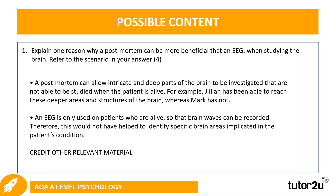The second part of the answer involves discussing the EEG. An EEG is only used on patients who are alive so that brain waves can be recorded. Therefore, this would not have helped to identify specific brain areas implicated in the patient's condition. You are distinguishing between a post-mortem and an EEG, and explaining why in this specific scenario a post-mortem would have been better to use instead of an EEG.